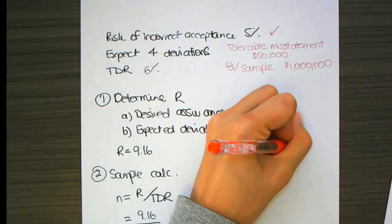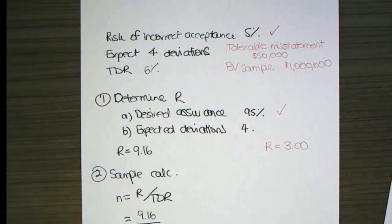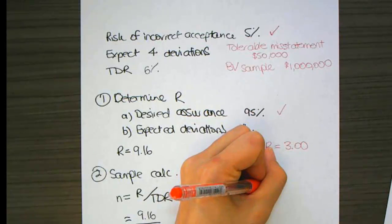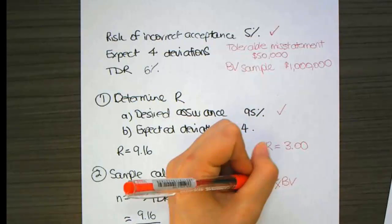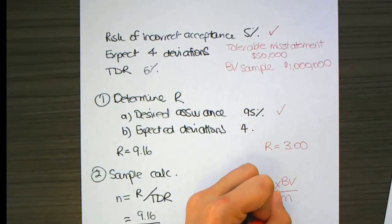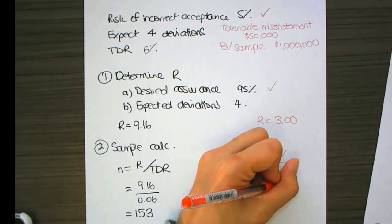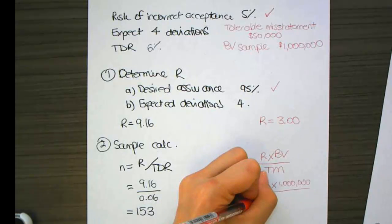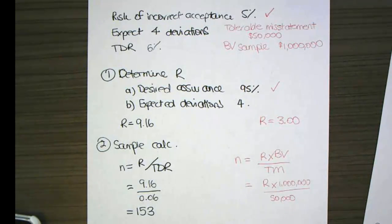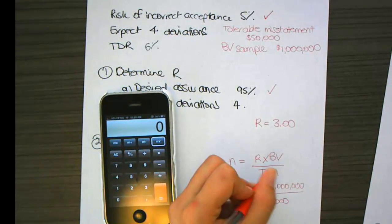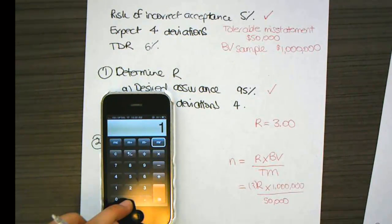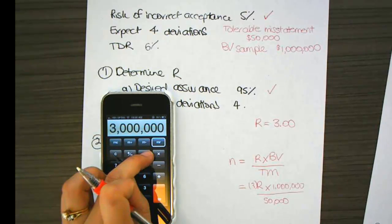Alright, so now let's do our sample calculation. N equals R multiplied by, what's our formula? BV divided by tolerable misstatement. So R is 3, book value is $1 million, divided by $50,000. So let's do that on my calculator. Turn my calculator on. I want to put R in, 3 there. 3 times 1 million, divided by $50,000, is 60.